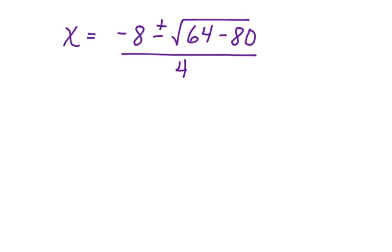Now we have to work with what's here inside the radical, inside the square root, before we can do anything else. So we have x is equal to negative 8 plus or minus the square root of negative 16 divided by 4.